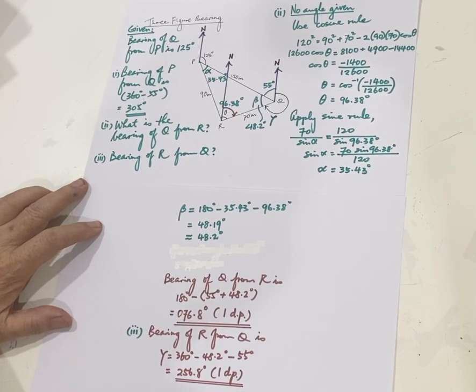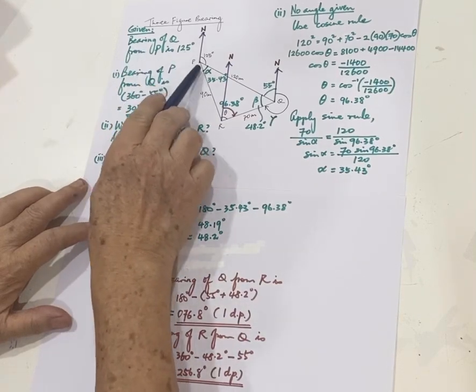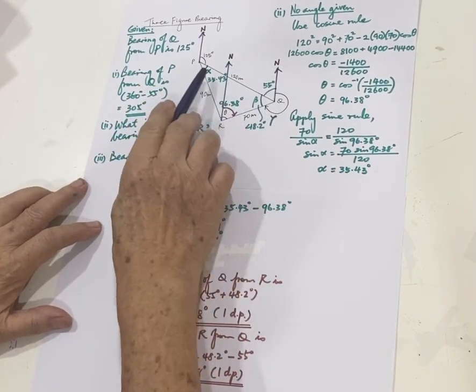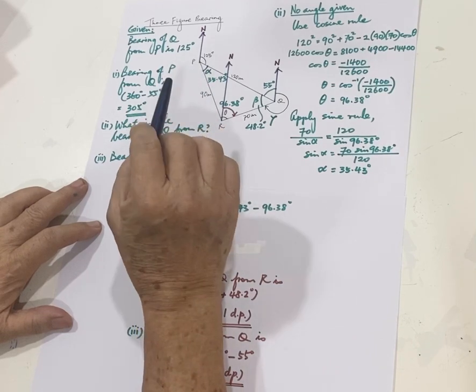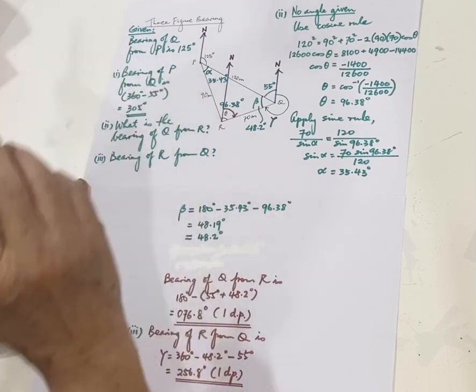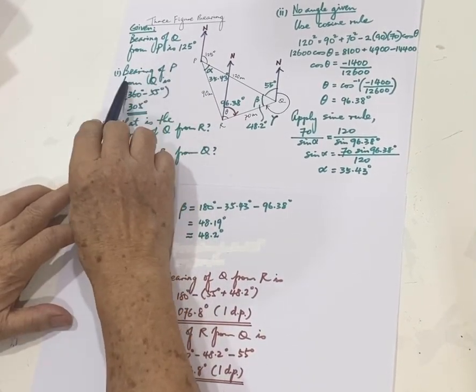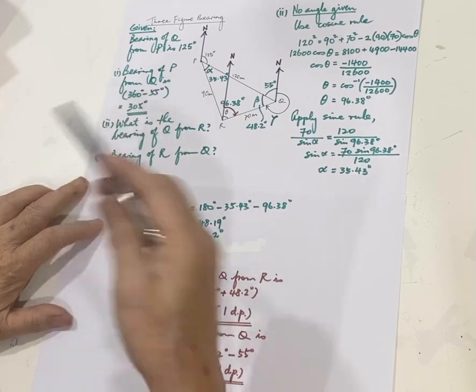Right, let's say we are given bearing of Q from P, it's 125 degrees, so it's three figures already and it's exact, so we just leave it like that. Let's say the question wants bearing of P from Q, so that is pretty direct.